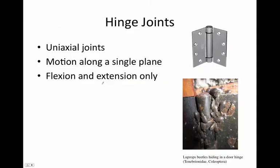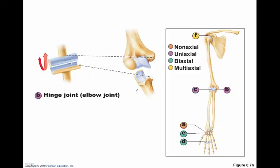Hinge joints are uniaxial joints. They have motion along a single plane, and they have flexion and extension only. The classic example we reference would be the trochlear notch, which is going to jive with the trochlea, and that joint right there is a hinge joint.